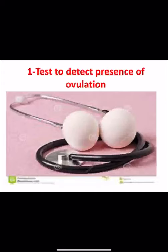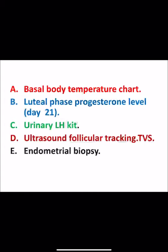How do we diagnose ovulation? Regular cycles, mid-cycle pain, and sometimes mid-cycle spotting or bleeding suggest ovulation, but we need several tests to confirm it. The first test is the basal body temperature chart: the patient measures her temperature every day upon rising from bed before eating or drinking. An increase of 0.2 degrees centigrade in the second half of the cycle for three consecutive days is consistent with ovulation — this is called a biphasic temperature chart.